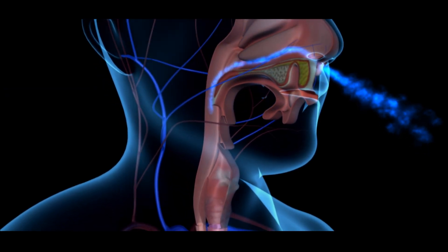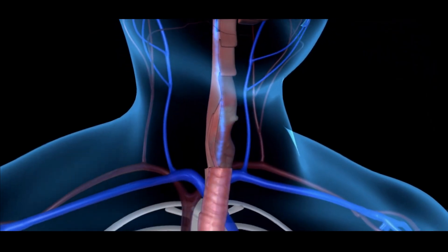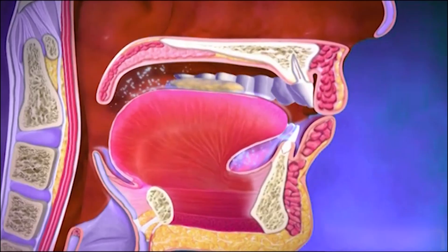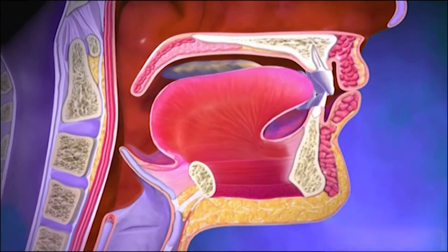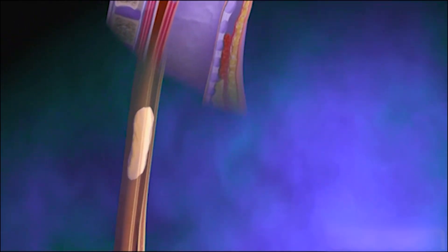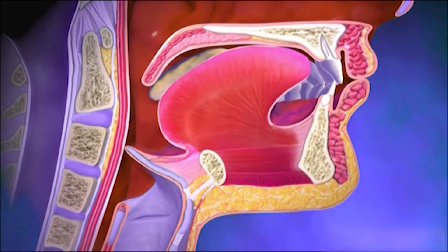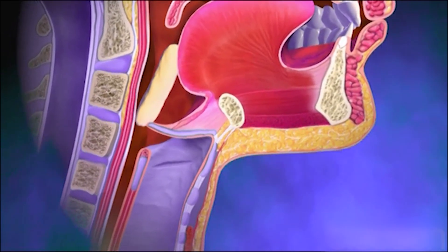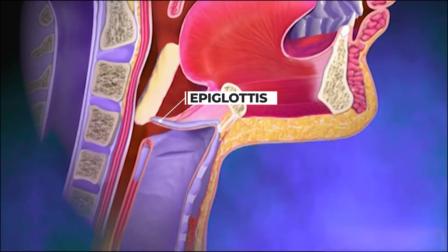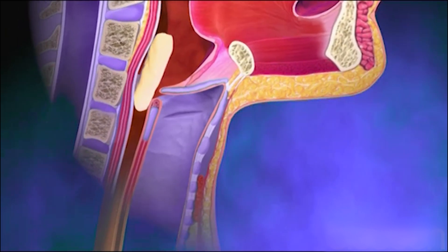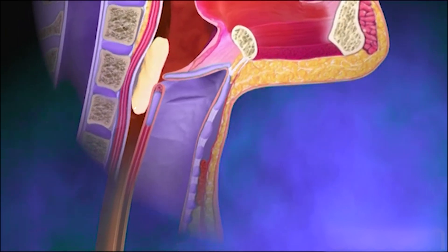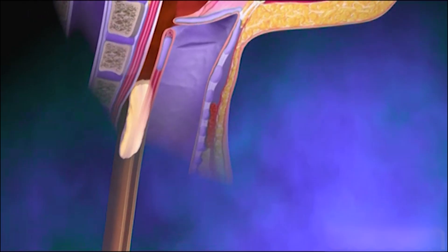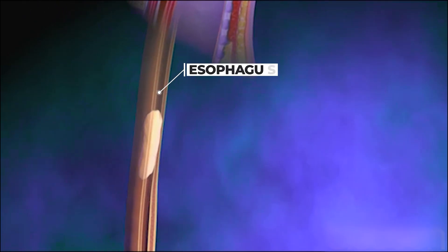When we breathe, air from the nose or mouth enters the pharynx and then moves into the larynx. However, when we eat, food passes through the pharynx and enters the esophagus. This happens because just below the pharynx, there is a small flap-like structure called the epiglottis. When food reaches the pharynx, the weight of the food pushes the epiglottis downward, closing the windpipe. This prevents food from entering the airway and ensures it moves safely into the esophagus.